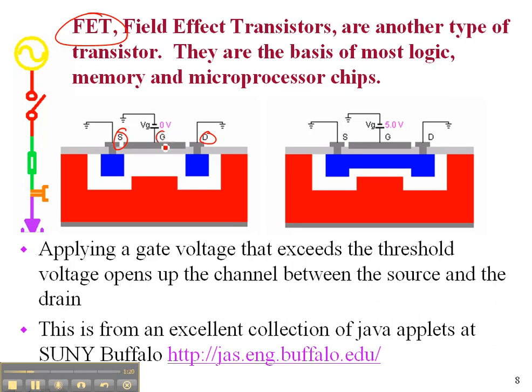In a field effect transistor, rather than emitter, base, and collector, you have a source, a drain, and a gate. When there's no voltage on the gate nothing happens, but when you put a voltage on the gate, a connection forms between the source and the drain, and current flows from one to the other.